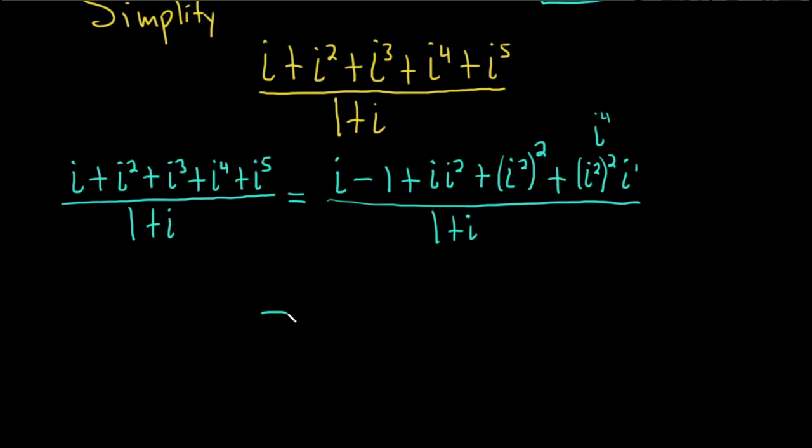Okay, this is equal to, so let's see, this is i minus, so here i squared is negative 1, right? So this is going to be i times negative 1. So it'll be minus 1, minus, and then this one's in minus i.